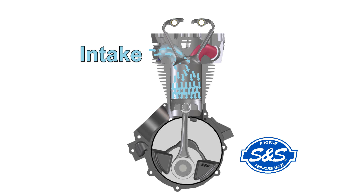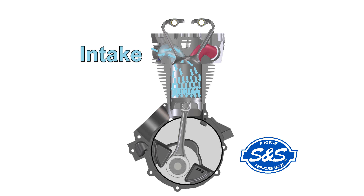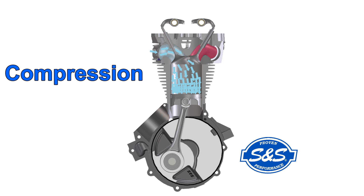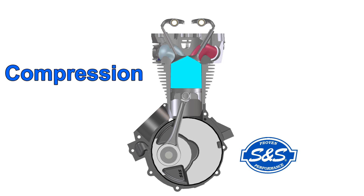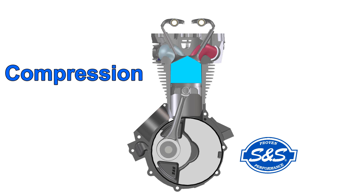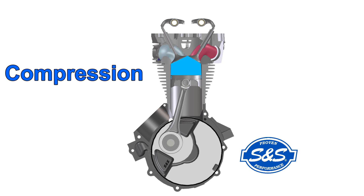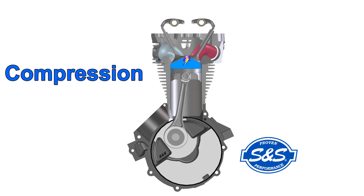The intake valve closes, trapping the charge of air and fuel in the cylinder. The piston moving upward compresses the air-fuel mixture — this is the compression stroke. Somewhere between 25 and 35 degrees before the piston reaches top dead center, or TDC, the spark plug fires, igniting the fuel and air mixture. This all happens very fast in a running engine and the actual time it takes the crankshaft to turn 30 degrees is very short, so we have to ignite the fuel before the piston reaches TDC to give the flame time to propagate. We'll talk more about this later in the video series.